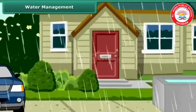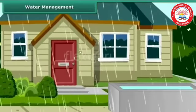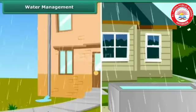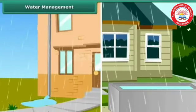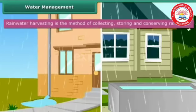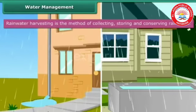We have seen that most of the water that we get as rainfall just flows away. This is a waste of a precious natural resource. The rainwater can be used to recharge the ground water. Rainwater harvesting is the method of collecting, storing, and conserving rainwater.